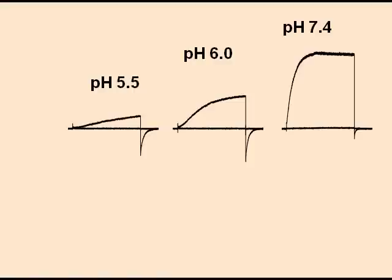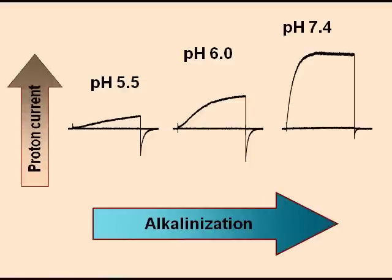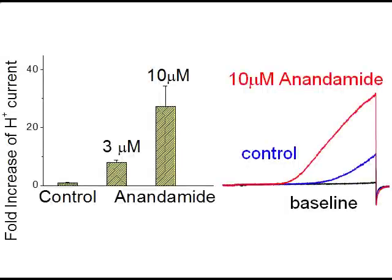But how is this proton conductance regulated? We found that extracellular alkalinization dramatically increases voltage-dependent proton current in the sperm cells. Moreover, we found that this proton conductance can be upregulated by endocannabinoid anandamide, the substance which is known to be released from the cells which surround and protect the egg.